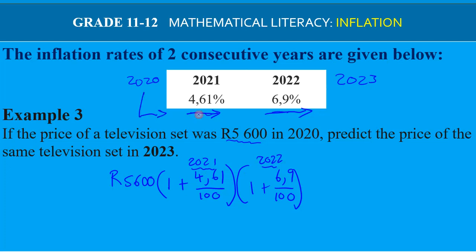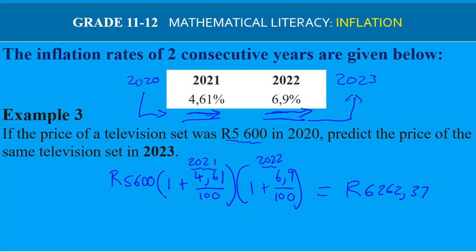By using these brackets — one for 2021 inflation and one for 2022 inflation — we can predict the price in 2023. The price of the television set works out to R6262.37. Remember, each year must have its own bracket.